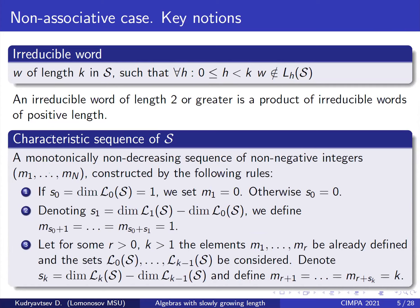I will now move to the non-associative case and introduce two key notions. The first is inherited from the associative case: the notion of an irreducible word. We say that a word w of length k in S is irreducible if for all h strictly less than k, w does not belong to L_h(S) — that is, w cannot be represented as a linear combination of words of lesser lengths. It is easy to see that an irreducible word of length two or greater is a product of irreducible words of positive length.